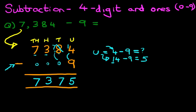7,384 minus 9 is 7,375. That is correct. So let's give it a nice big tick. So that is how we do subtraction of 4 digit numbers and ones using the vertical format.